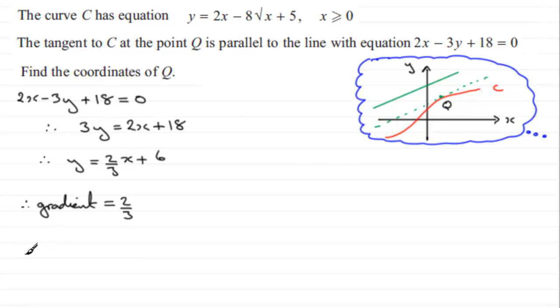So dy by dx is going to equal, well if we differentiate the first term, it's 2. This is minus 8x to the power half. And if we differentiate that in the usual way, you'll have minus 8 times a half, which is 4. Reduce the power by 1 and you get x to the power minus a half, which can be written in a simpler form as 2 minus 4, and x to the minus half is 1 over x to the power half, or 1 over root x. So that's 4 over the square root of x.